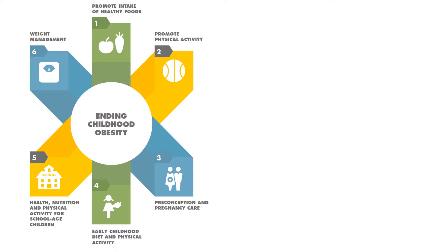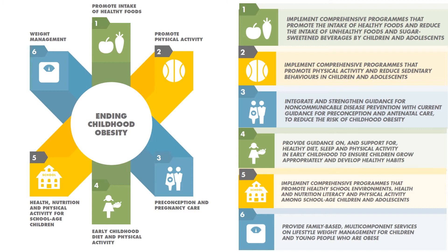Here we see the six main demands of action from the ECHO Plan. They involve intake of healthy foods, promoting physical activity, intervening in preconception and during pregnancy, tackling early childhood diet and physical activity, looking at health, nutrition and physical activity for school-aged children, and dealing with weight management for children who are already overweight or obese.